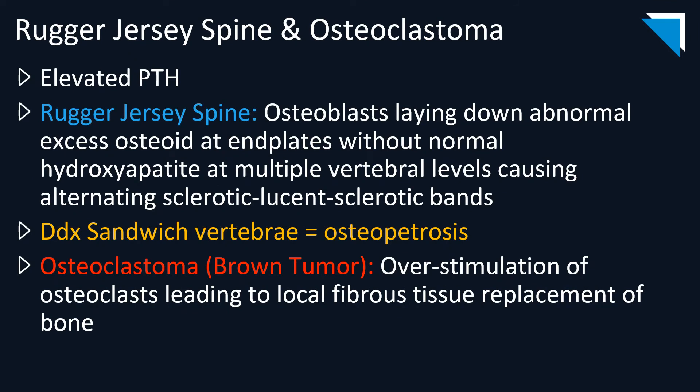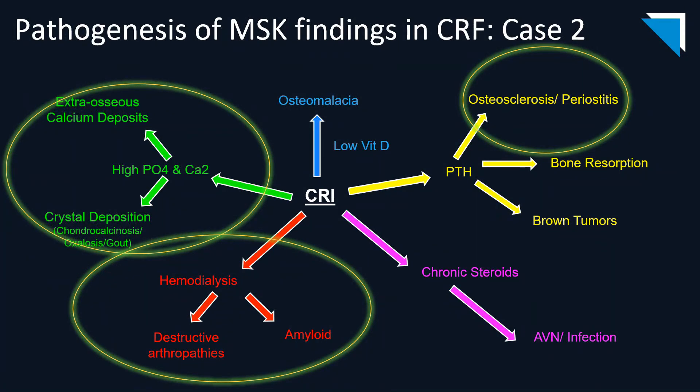This first case is a combination of rugger jersey spine with osteoclastoma formation, also referred to as a brown tumor. Both are consequences of chronically elevated parathyroid hormone, with abnormal osteoid deposition at end plates causing the alternating bands of sclerosis and lucency. A differential consideration is the sandwich vertebra seen with osteopetrosis, which is typically less smudgy in appearance with more defined transition between bands. The osteoclastoma represents local replacement of bone with abnormal fibrous tissue causing the lucent appearance.